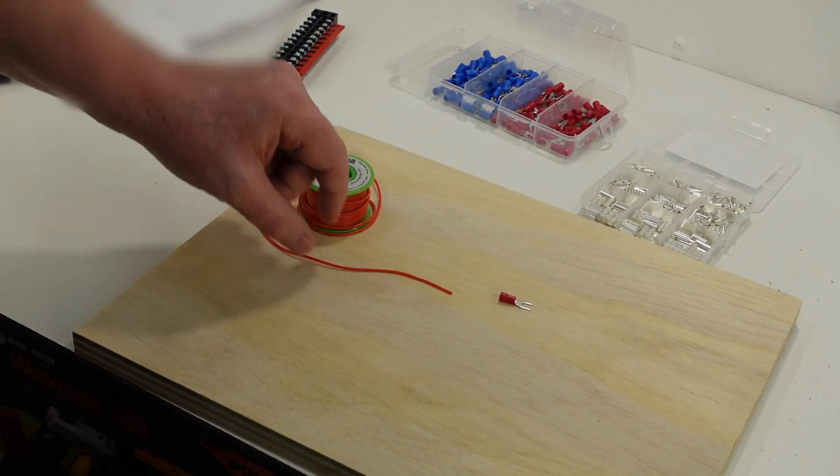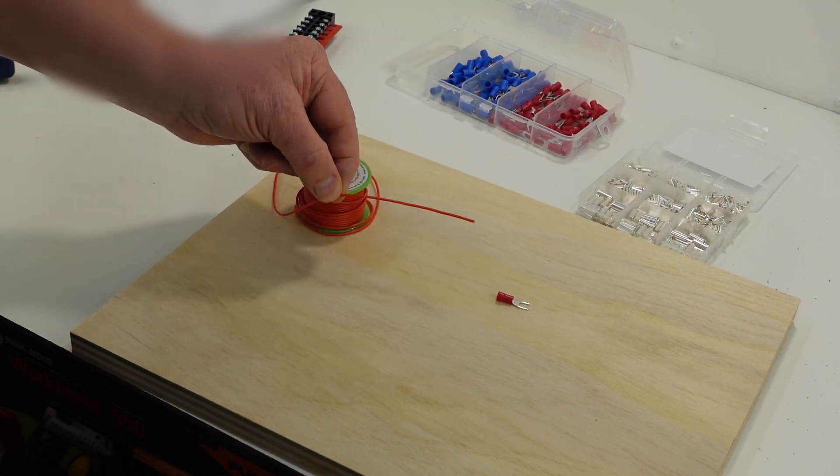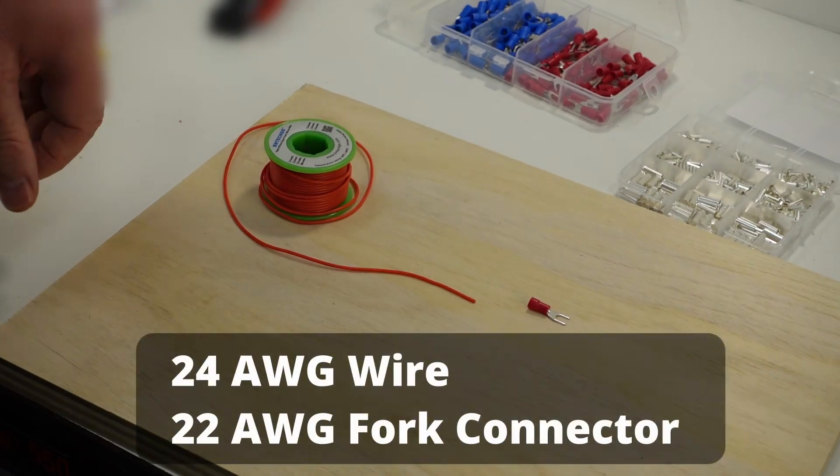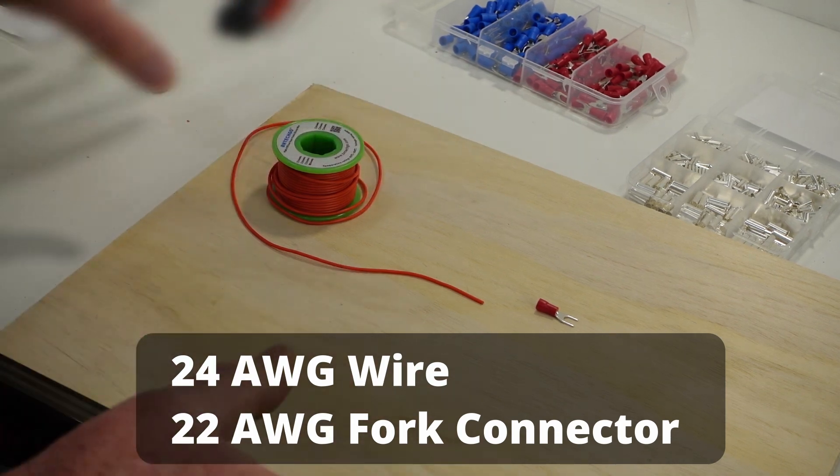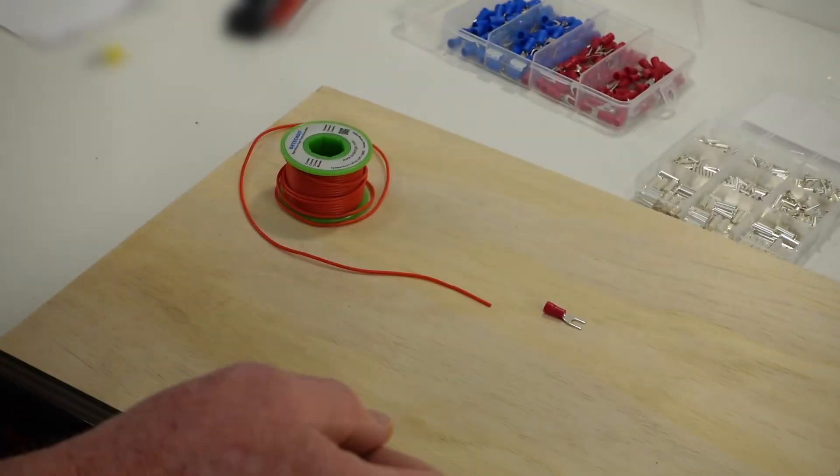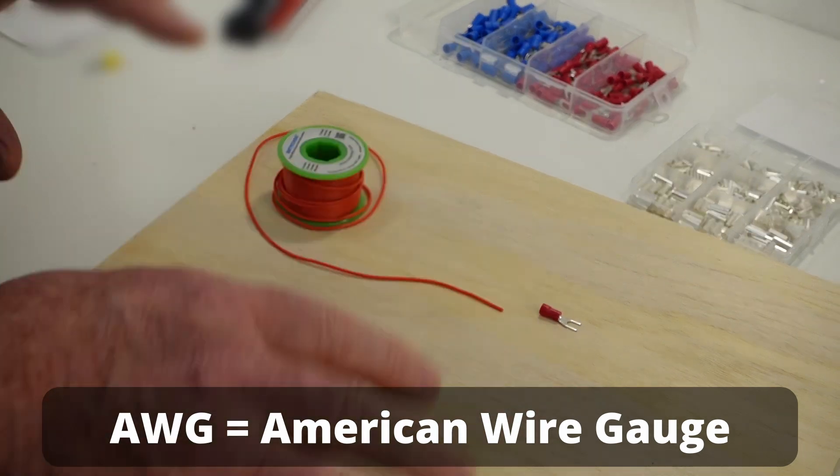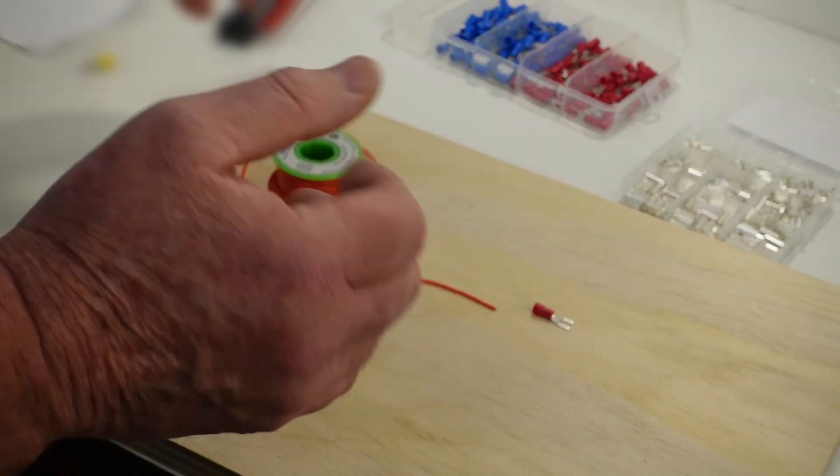So in this case here, we have a 24-gauge wire and we have a 22-gauge connector. Now typically, we like to use stuff that's lying around the house. So in an ideal situation, you would want your wires to match your connectors gauge-wise, but sometimes that can't happen.